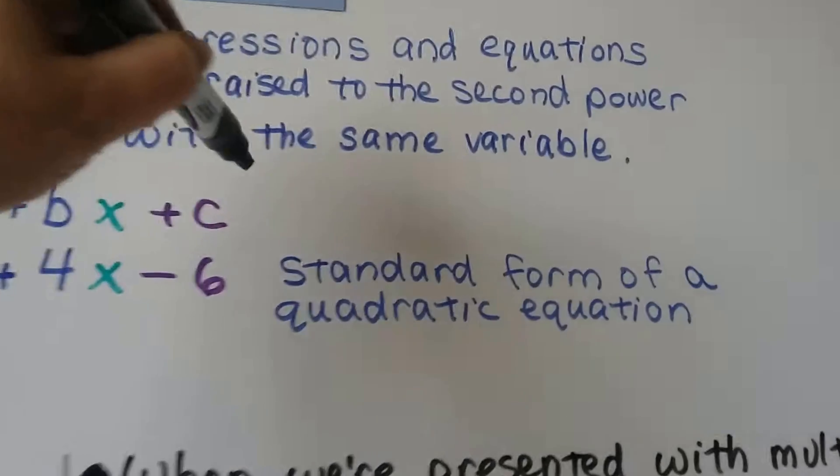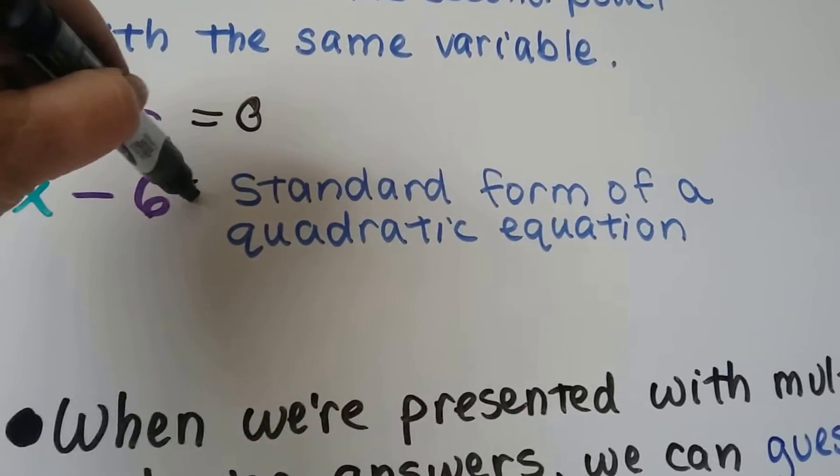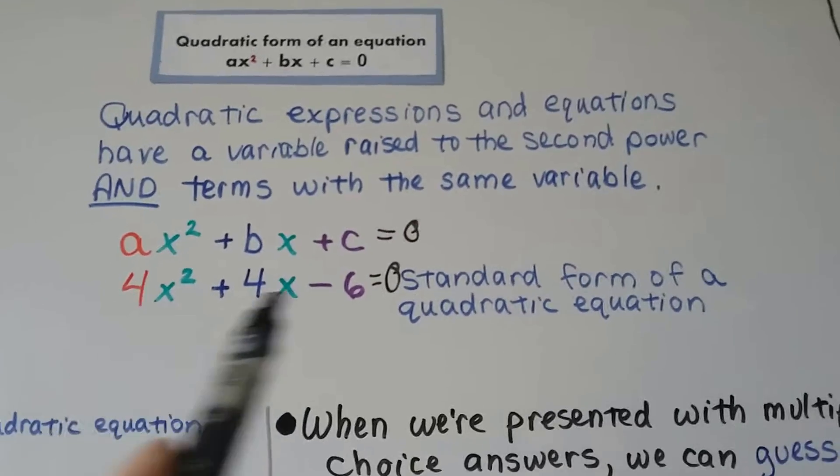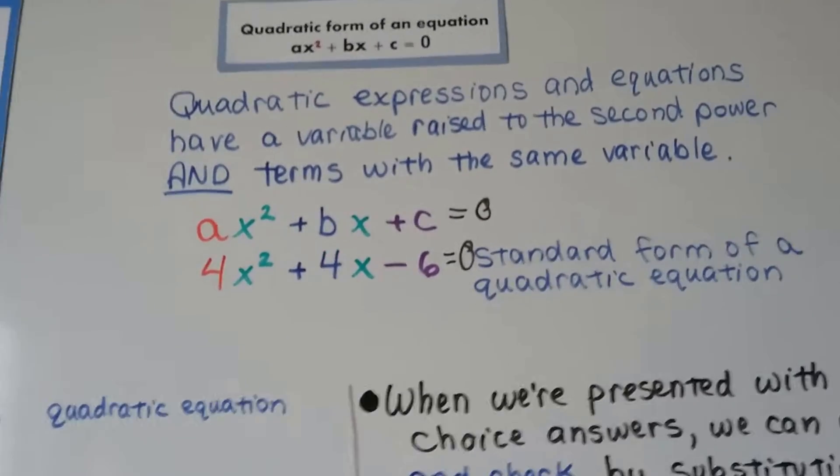So this is the standard form of a quadratic equation. In fact, it should say equals zero, shouldn't it? An expression would just be like this without the equal sign. So these are equations because they have an equal sign and a zero.